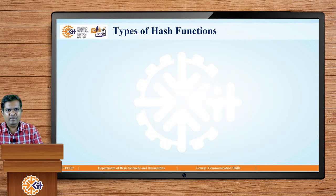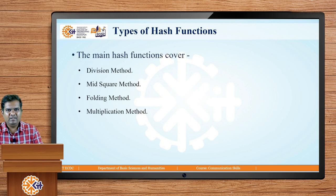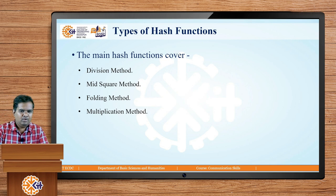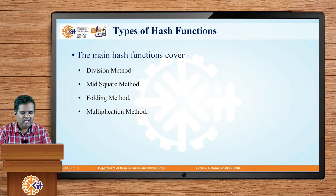Now let us understand which types of hash functions exist. We have seen the hash function that performs modulo by the hash table size. There are different methods through which we can implement the hash function: the division method, the mid-square method, the folding method, and the multiplication method. Let us understand how these methods help find hash values.